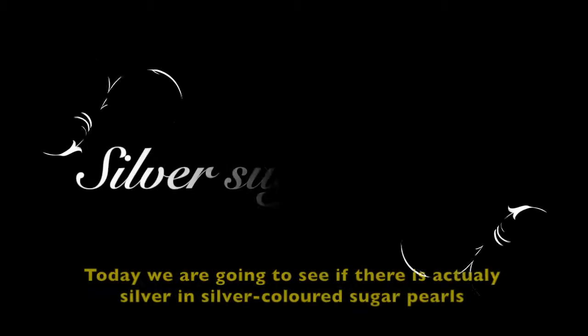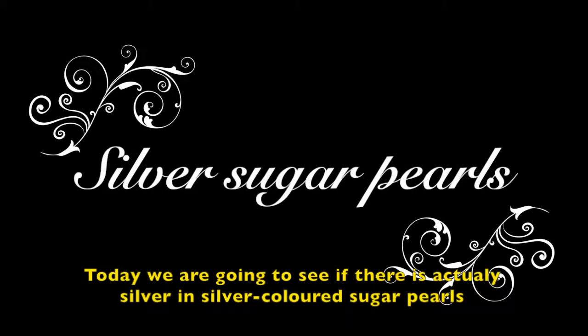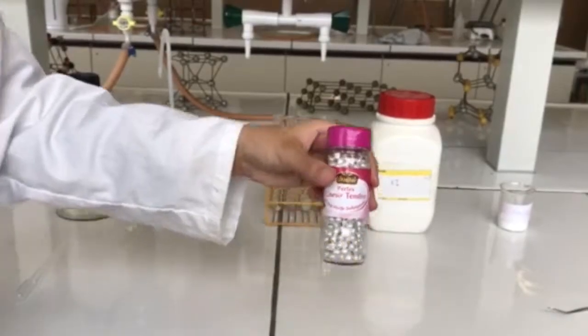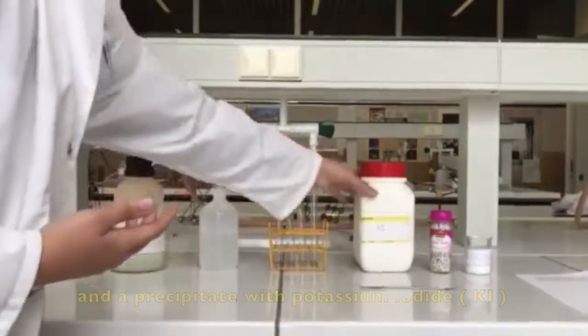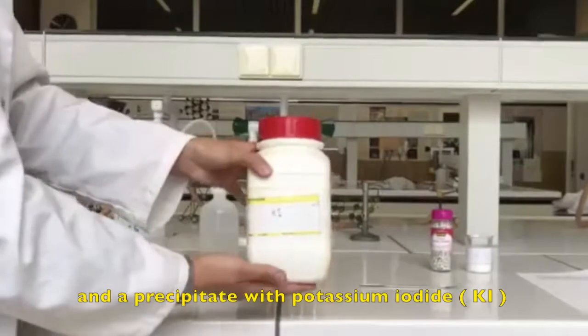Hello everyone, today we are going to see if there is actual silver in silver colored sugar pearls. We are going to prove this with a precipitate of sodium chloride and a precipitate with potassium iodide.